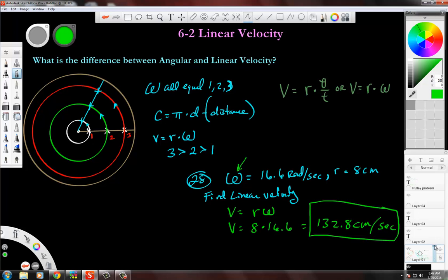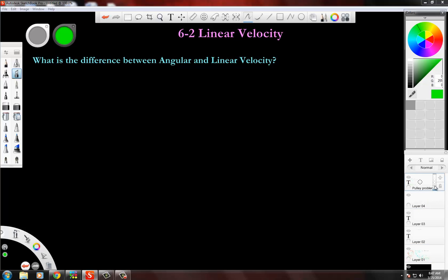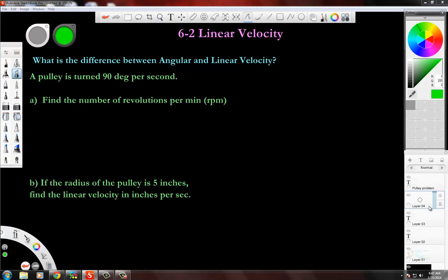All right, cool. Let me get that off there, and then we're going to do another little bit more involved type problem here. Last problem here, and this is a pretty big one. It says a pulley is turned 90 degrees per second. There's a question in tonight's homework that's going to be very similar to this. A pulley is turned 90 degrees per second. Find the number of revolutions per minute. That's called the RPM. If you ever hear that, that's revolutions per minute.